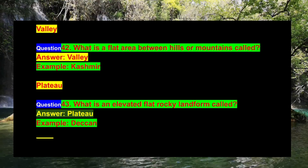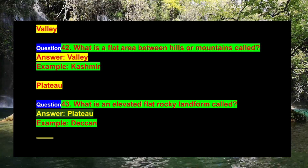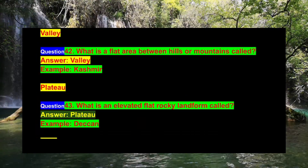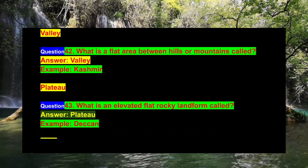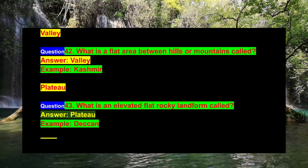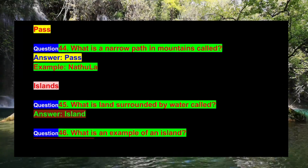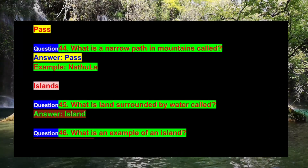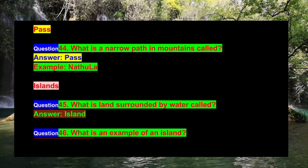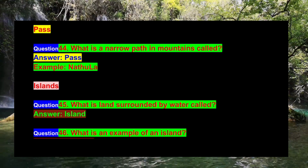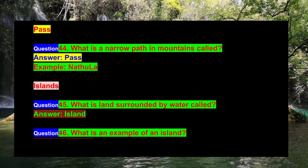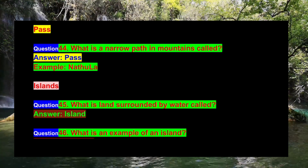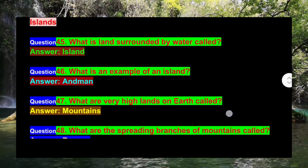Question 43: What is an elevated flat rocky landform called? Answer: Plateau. Example: Deccan. Question 44: What is a narrow path in mountains called? Answer: Pass. Example: Nathula.